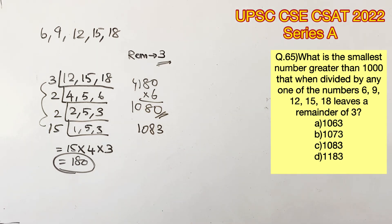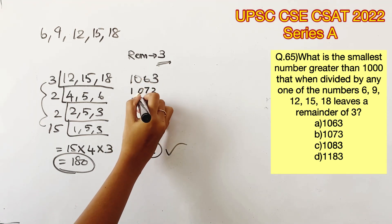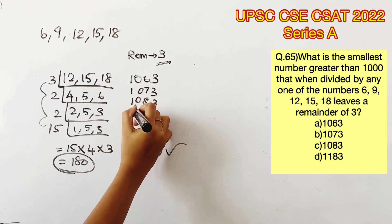There's also another method with which you can arrive at the answer. This is just to save some of your time because aptitude is all about arriving at the answer in the quickest way possible. What I'm going to do now is write down all the options given.